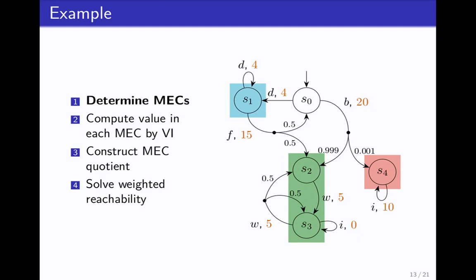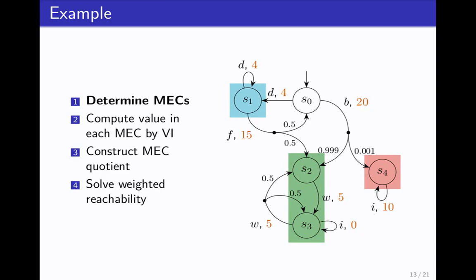What are we doing? We determine the MECs. We compute the values in each. So up here we have a value of 4 because the best you can do while remaining in here is continue dancing. Down here it's the 10, and the best value here again is just having the 5.